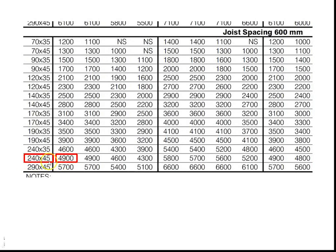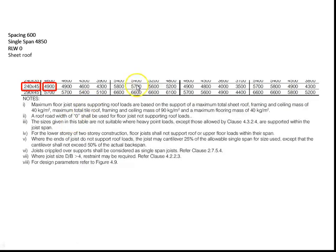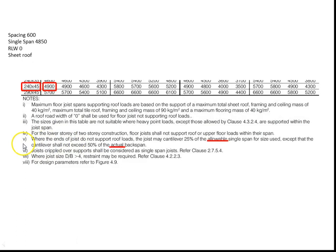Once we've narrowed down the size of timber we need, it's important to read the notes that are always underneath these tables. Here's a screen capture at the bottom of this table showing the size we've selected and a list of notes. I want to particularly look at note number five. There are two words to identify: 'actual' and 'allowable.' Note five refers to how far this joist can cantilever over the last bearer if it's appropriate to cantilever it out.